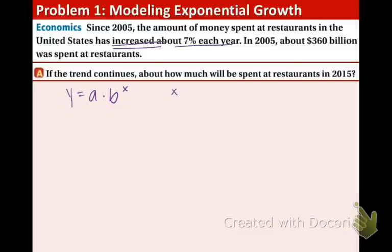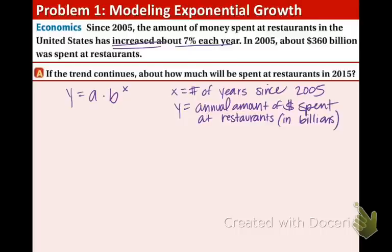x is going to be the number of years since 2005. And y is going to be the annual amount spent at restaurants. We're going to go up in billions. So to make the equation smaller, we're going to say that y is the annual amount of money in billions, so we don't have to write all those zeros.